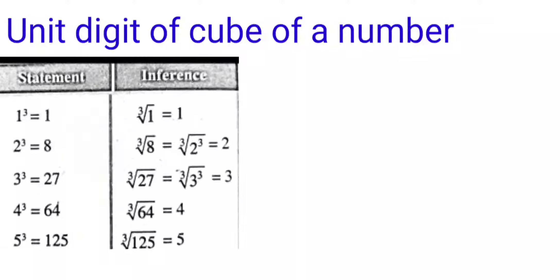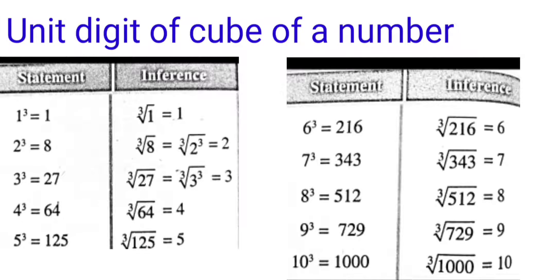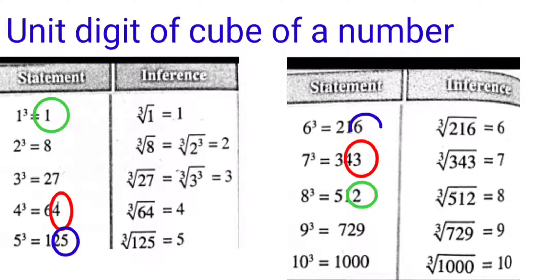Hello students, let's discuss the unit digit of the cube of a number. Here are some cubes of numbers listed below. We already know the cubes of 1 to 10. Through this table, observe the unit digits: 1, 2, 3, 4, 5, 6, 7, 8, 9, and 0. The unit digit of the cube of a number can end with 0 through 9.